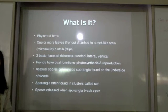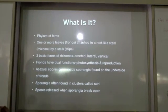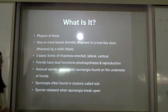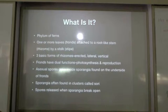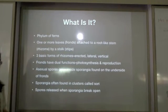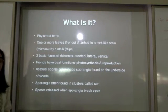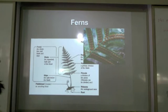The fronds have dual functions: the first one being photosynthesis and also reproduction. The asexual spores grow inside the sporangia found on the underside of the fronds. Sporangia are often found in clusters called sori, and spores are released when the sporangia break open.